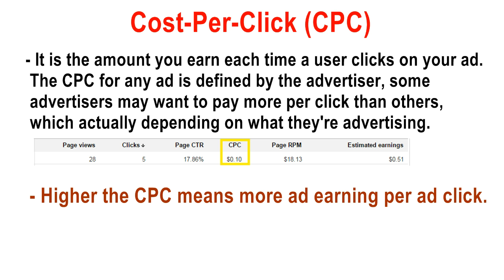Now let's move to the next one — CPC, which stands for cost per click. As the name implies, it is the amount you earn each time a user clicks on your ad. The CPC for any ad is defined by the advertisers — some advertisers may want to pay more per click than others.